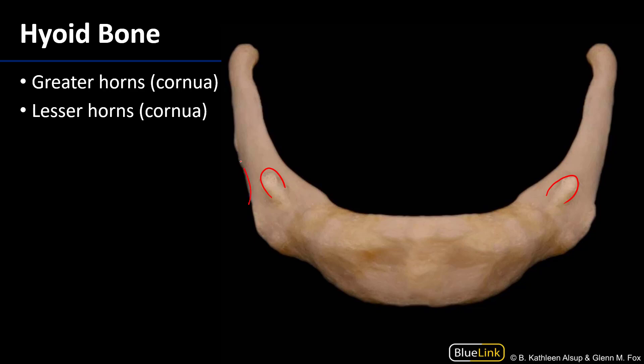And there are the greater horns, which are muscle attachment sites for several muscles, but in the context of this laboratory they're going to be attachment sites for the middle pharyngeal constrictor muscles, as well as an articulation point for the superior horns of the thyroid cartilage.